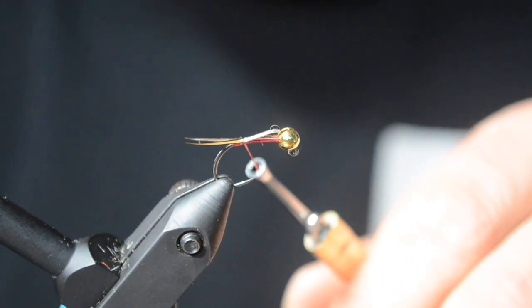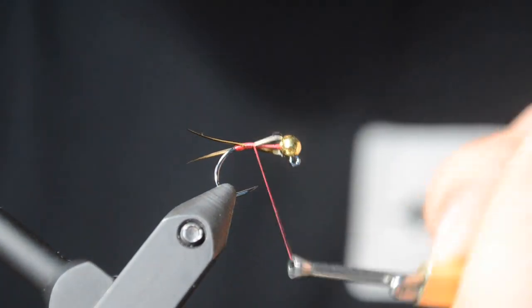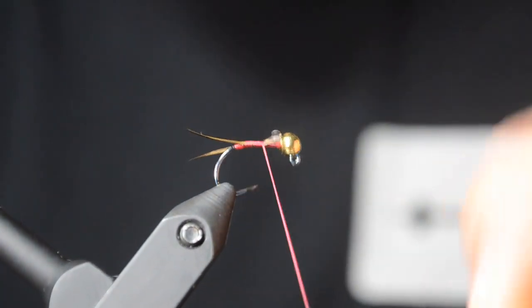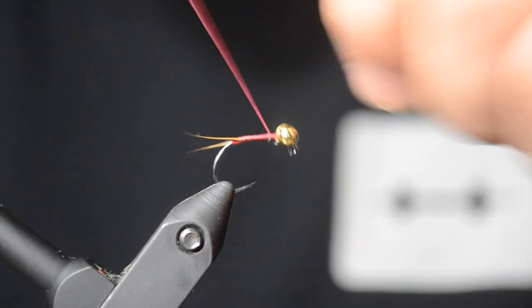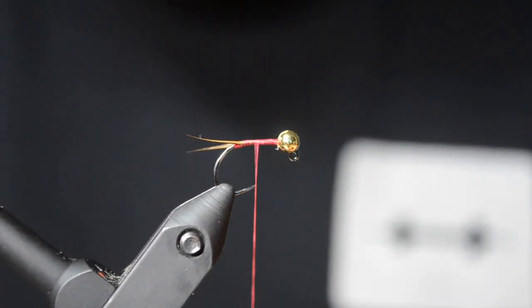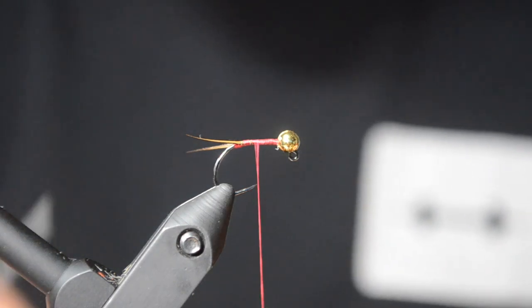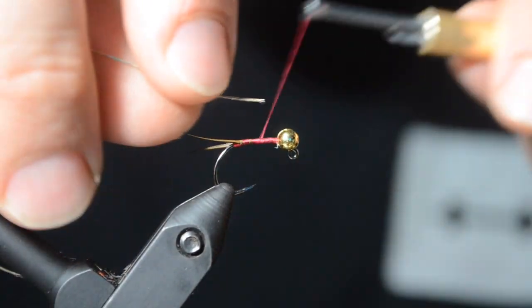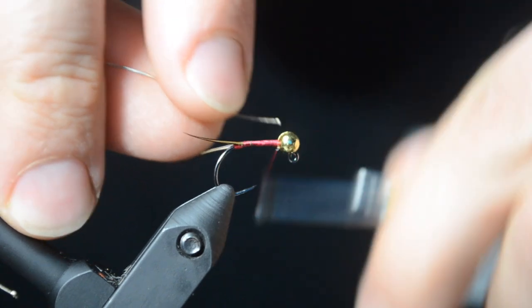So I like to use a red UTC on this fly, 70. And I tie a little tag below the tail. You can see I've tied in my biats here and brought the thread all the way up, keeping a nice even taper.